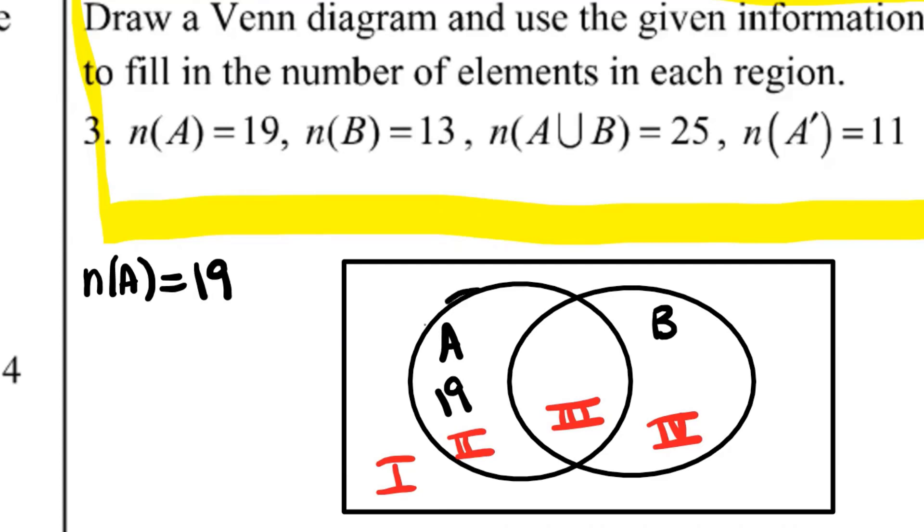In fact, A is both of these regions. It could be that there's one in region two and 18 in region three, or it could be there's zero in region two and 19 in region three. I just don't know.